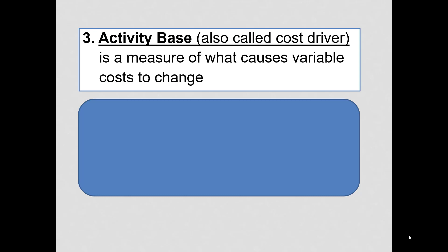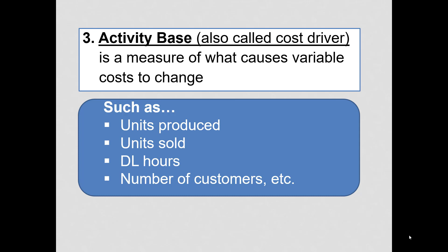An activity base, also called a cost driver, is a measure of what causes a variable cost to change, or the variable portion of a cost. Examples of cost drivers might be units produced, units sold, direct labor hours, number of customers, etc. There are all kinds of activity bases that you will see that will drive how a cost behaves.